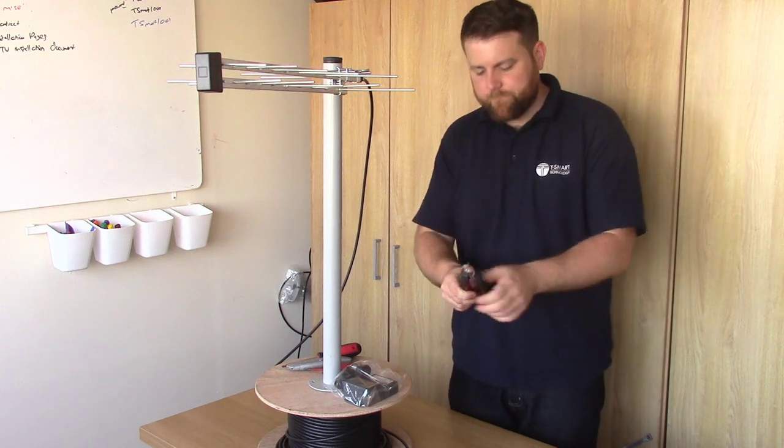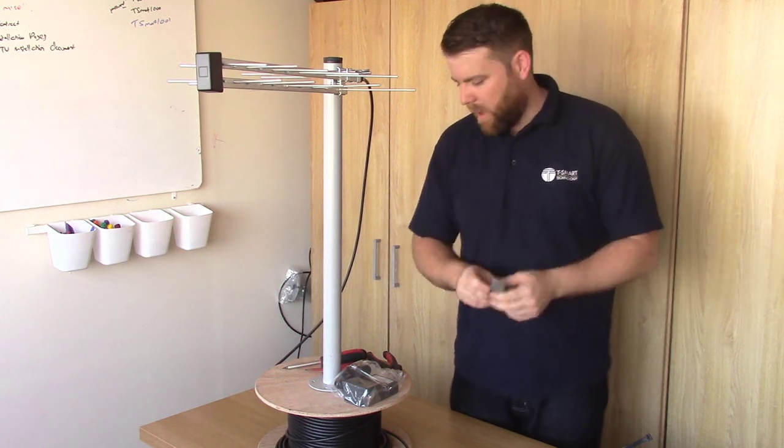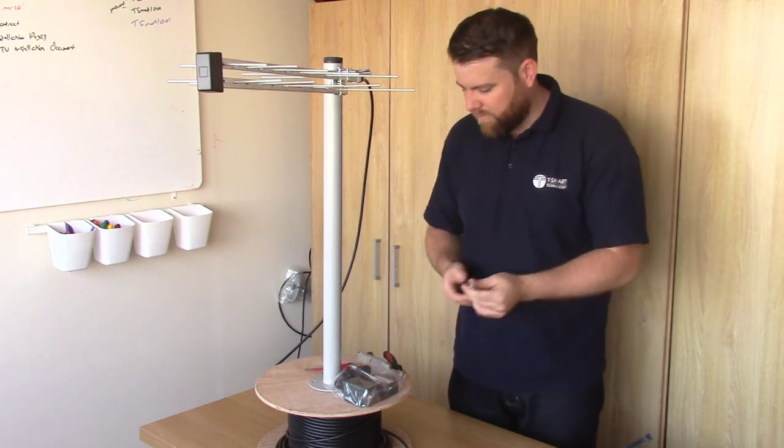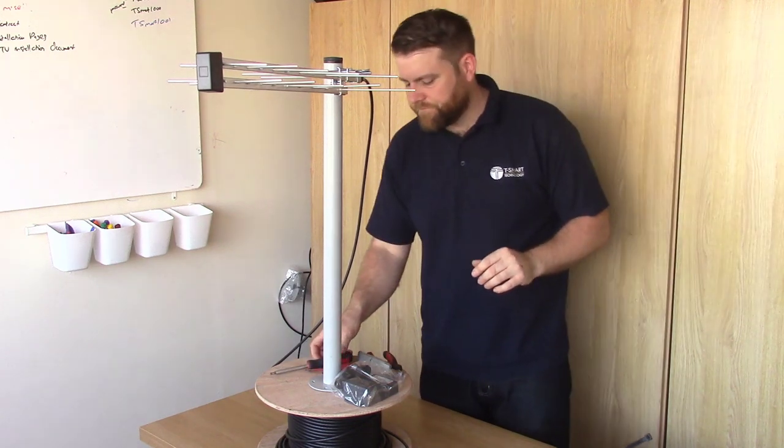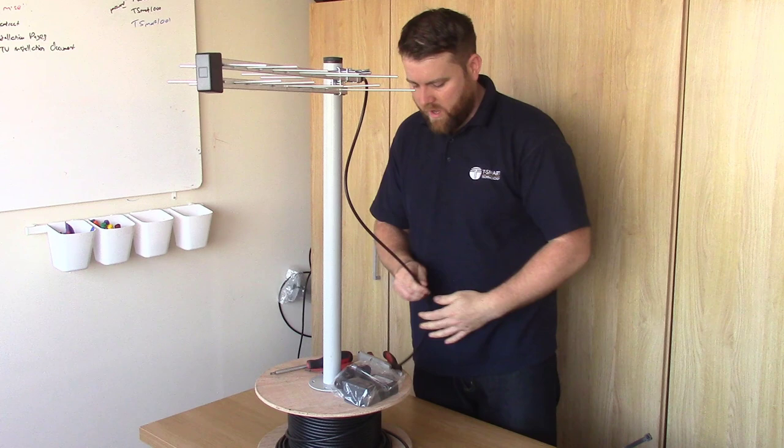Right. Tools we're going to need: set of cutters, Stanley knife to prepare the coaxial cable. I've got some screwdrivers here which we may need, we may not. So we're going to start off by intercepting the cable. So now I'm going to cut the cable here.